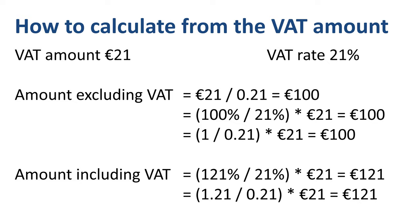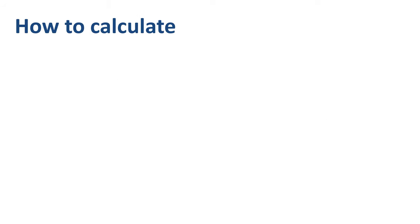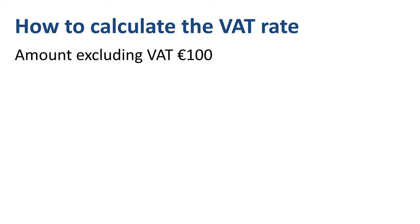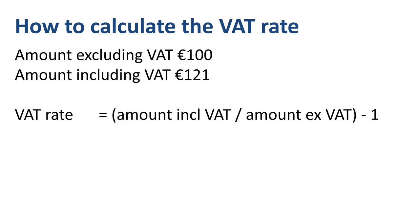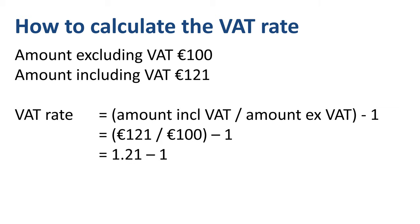How to calculate the VAT rate if you know the VAT inclusive and VAT exclusive amounts? First divide the amount including VAT by the amount excluding VAT, then deduct 1. In our example: (121 divided by 100) minus 1, which equals 1.21 minus 1, or 0.21, or 21%.